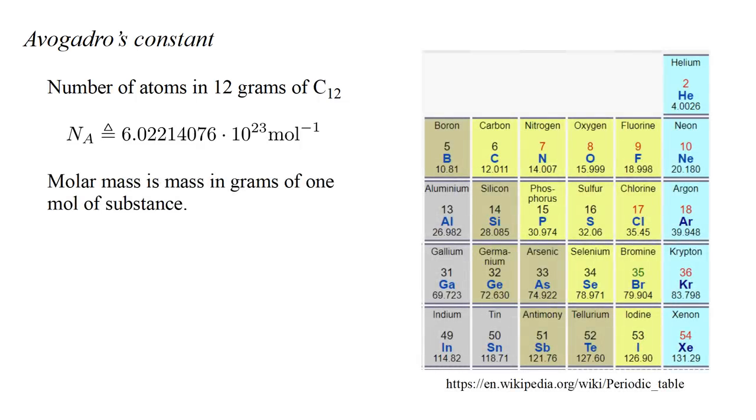The molar mass of an element is the mass in grams of one mole of atoms of that element. In this periodic table, atomic number, the number of protons in the nucleus, is shown above the element's chemical symbol. And molar mass is shown below. Molar mass essentially equals the number of protons plus the number of neutrons in the nucleus.